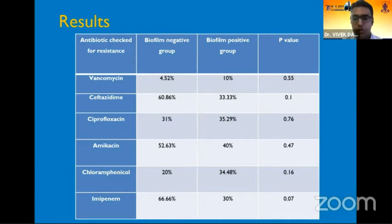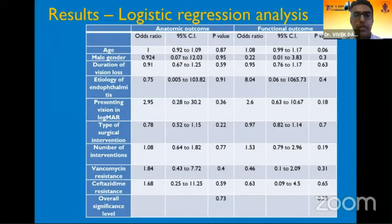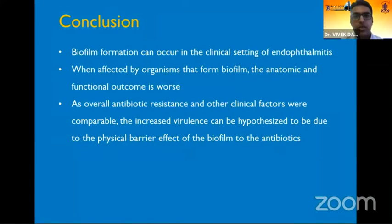To find if any of these factors had any bearing on the outcome, a detailed multivariate logistic regression analysis was done for both functional and anatomic outcomes using all possible parameters that could have influenced the outcome. In conclusion, we saw that biofilm formation could occur in the clinical setting of endophthalmitis. When affected by organisms that form biofilm, the anatomic and functional outcome is worse.